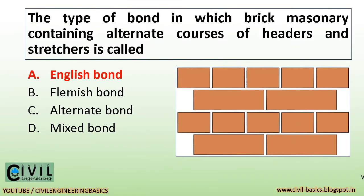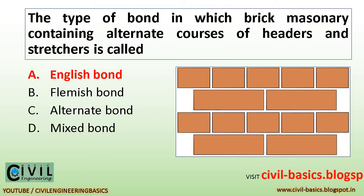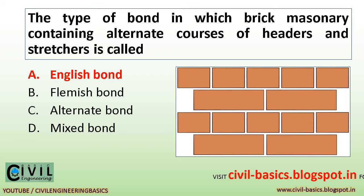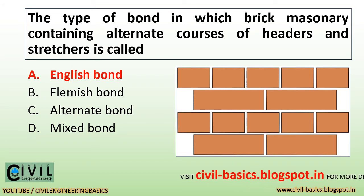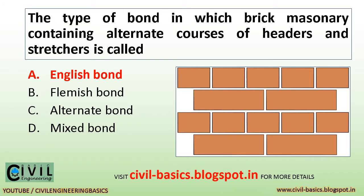The type of bond in which brick masonry contains alternate courses of headers and stretchers is called English bond.